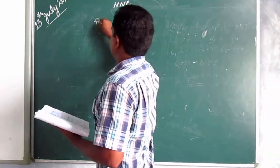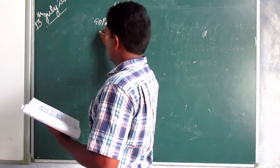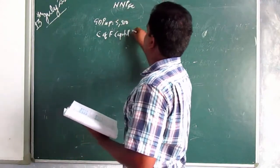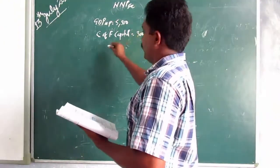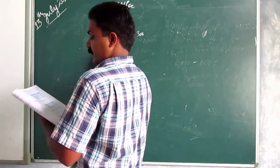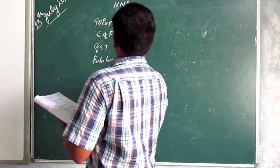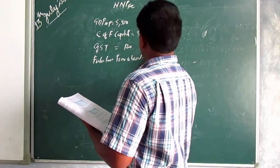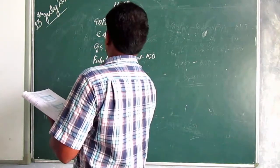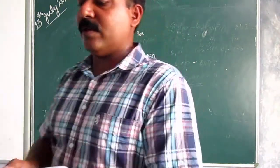The particulars given are: GDP_MP = 5500; consumption of fixed capital (depreciation) = 300; GST = 120; factor income from abroad = 150; subsidies = 70; factor income to abroad = 250. These are all the values given.